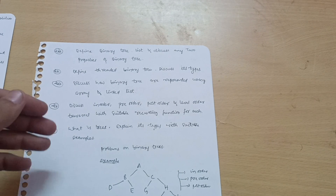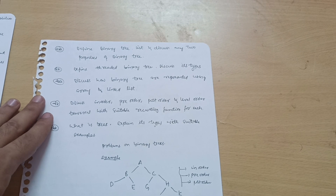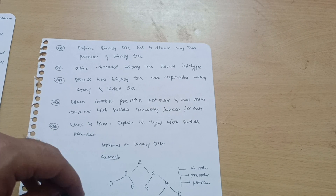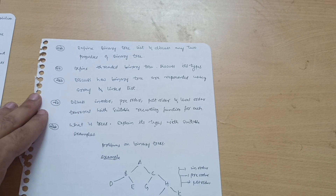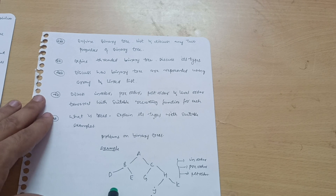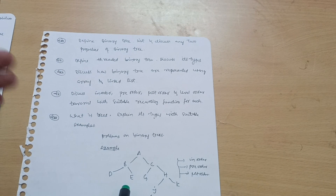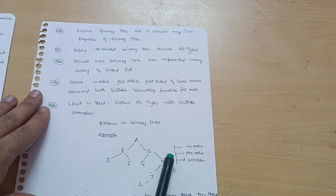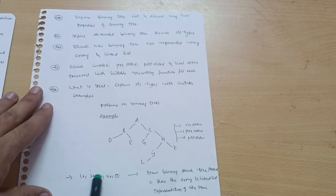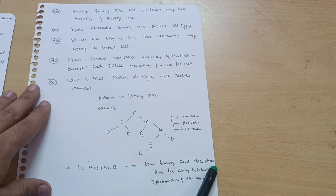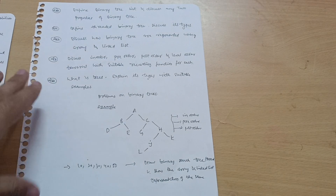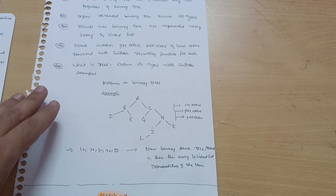Theory questions I have listed as possible passing questions for this subject - I referred to all previous year question papers and the syllabus to match which topics are relevant. For the problematic part, there will be no definite question since the structure of binary trees may vary. You should go through a variety of problems on in-order, pre-order, and post-order traversals. A possible question is: draw a binary search tree or threaded tree and show the array and linked list representation of the same.